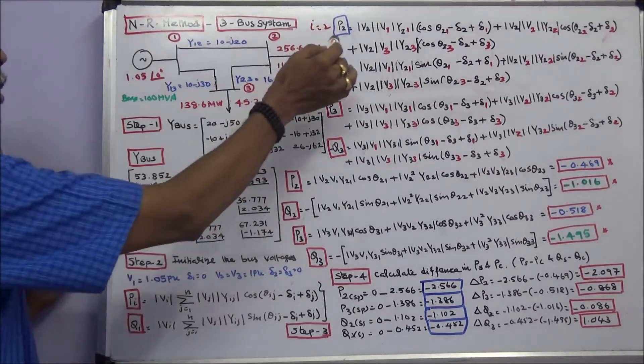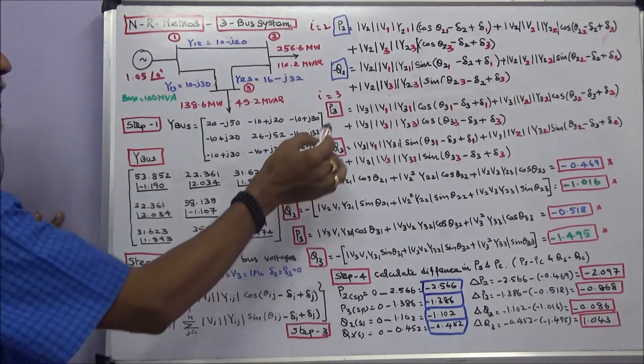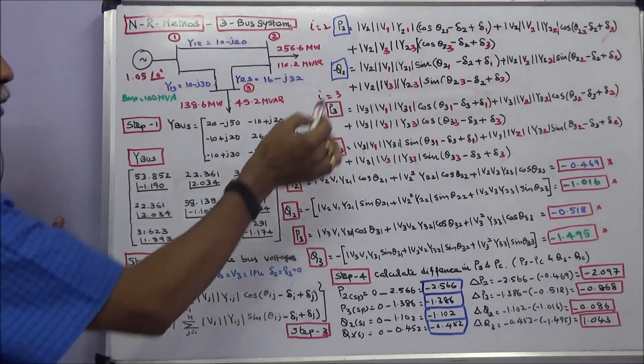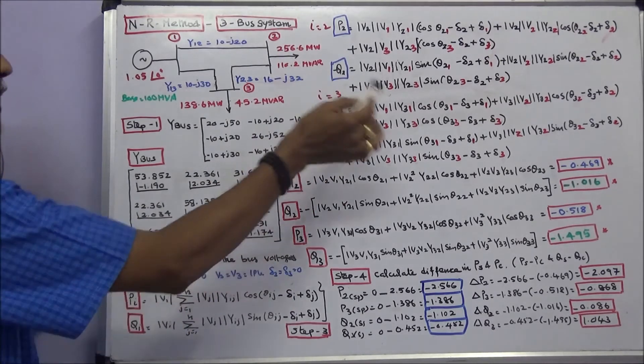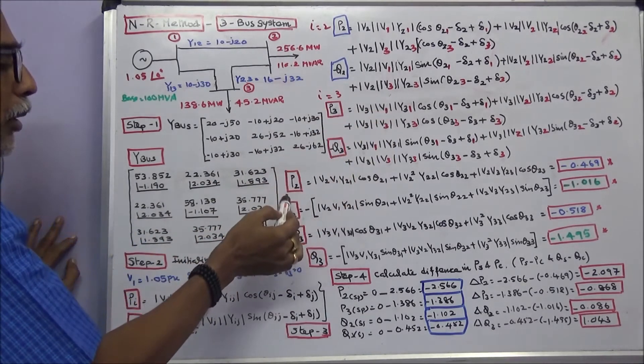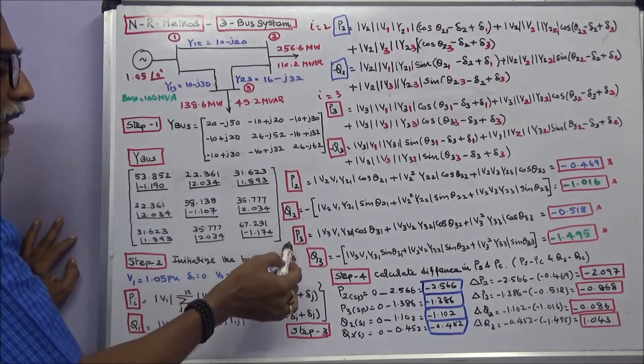I is the fixed variable, J is the running variable. P2, Q2, P3, Q3. Substitute all the values from this matrix, you can calculate P2, Q2, P3, Q3.